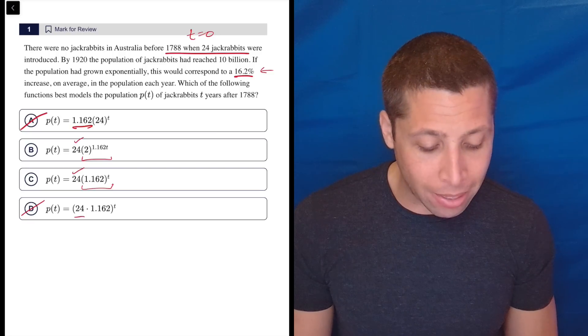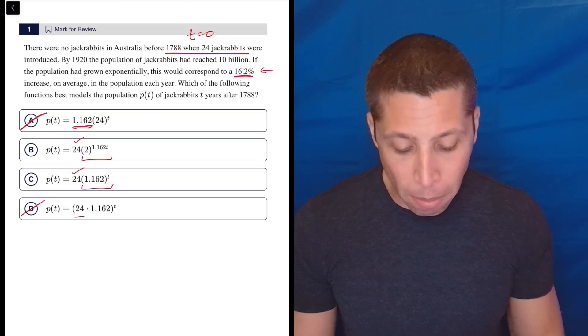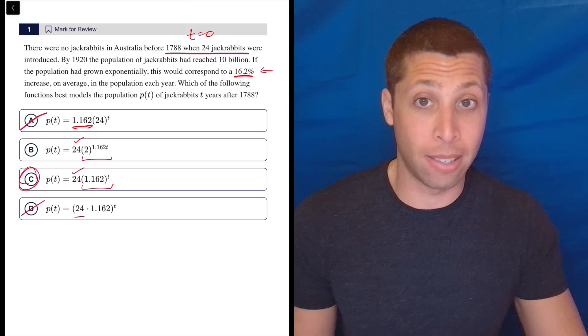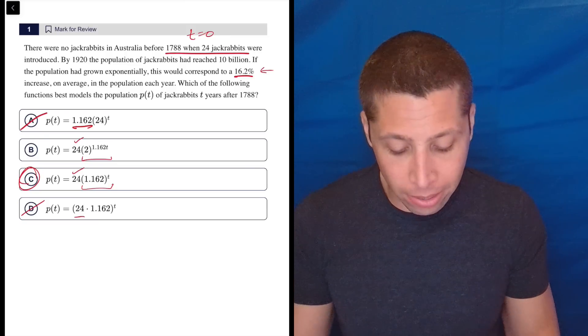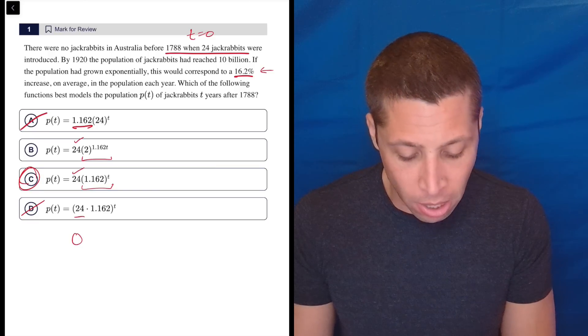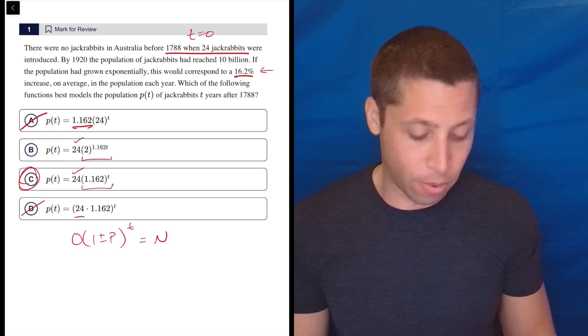Then we have to worry about this 16.2%. That's our change rate. And I think most of you are probably going to just naturally put it in C, because that's what we have. This is basically our OPTN formula we use for percentages. It's O, one plus or minus P to the T is equal to N.